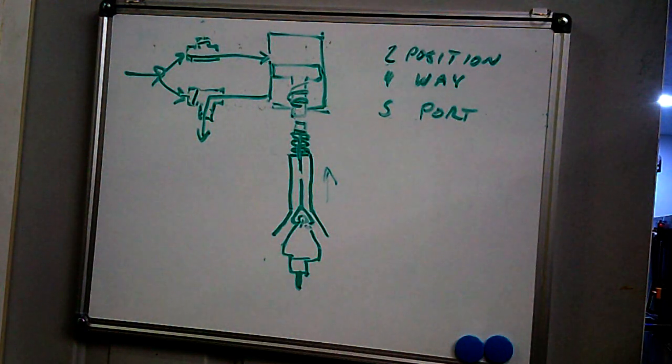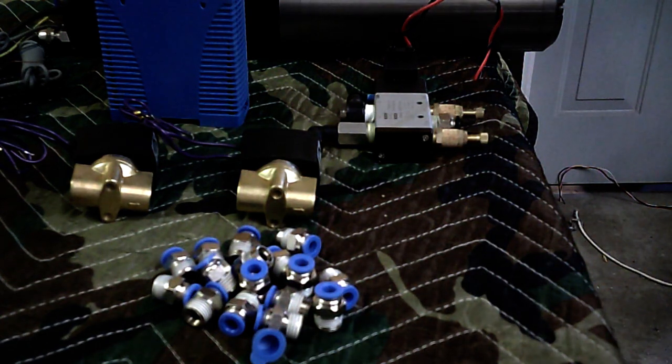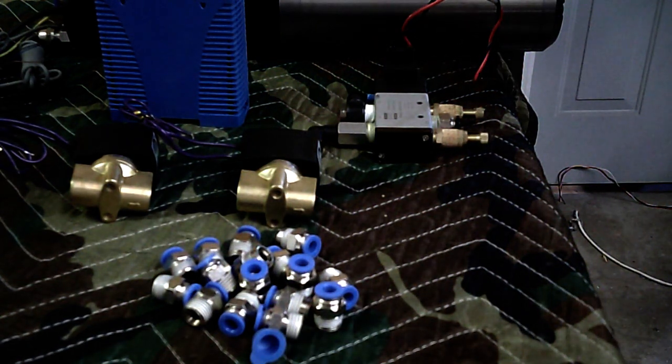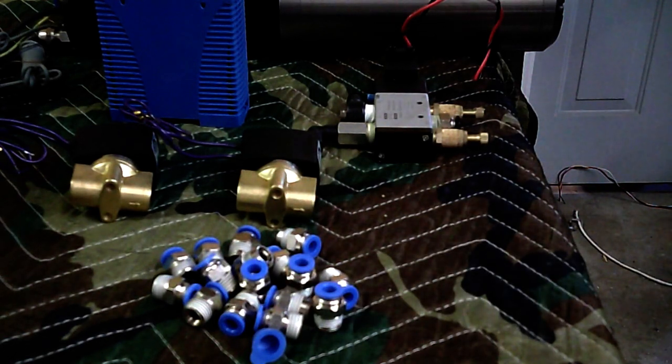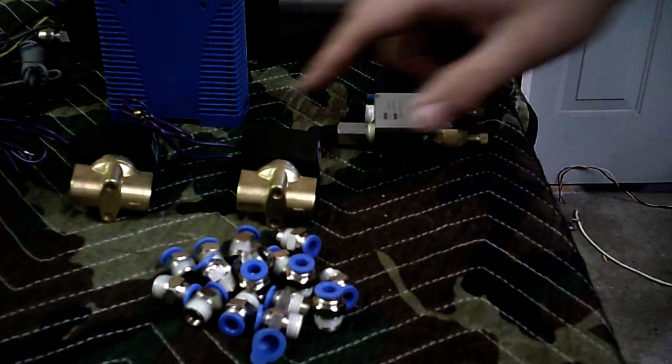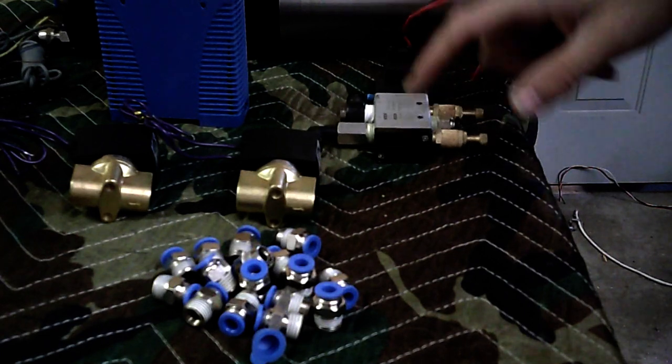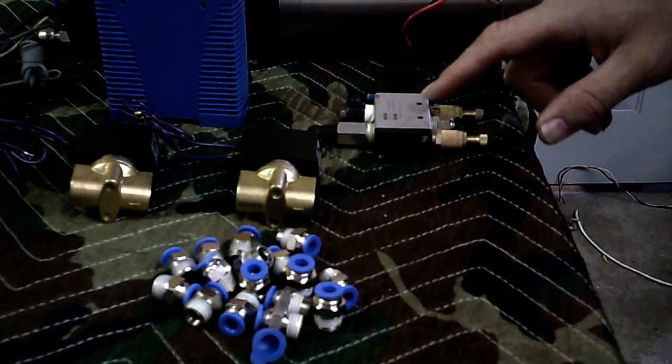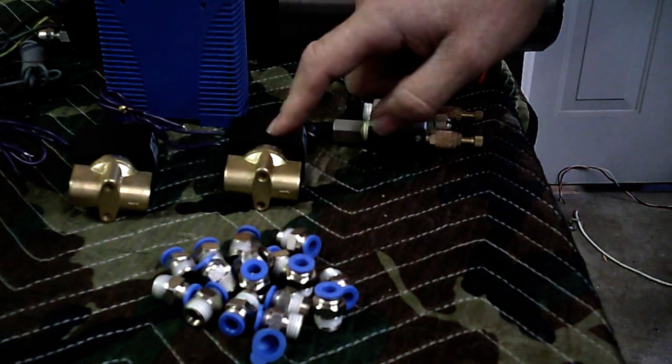Now back over to the spindle itself. I've got some of the equipment assembled here, or gathered up, for installing the spindle in the machine. You notice I have three solenoid valves. This is that two position four-way five port solenoid valve I was talking about. These are just simple one-way solenoid valves.